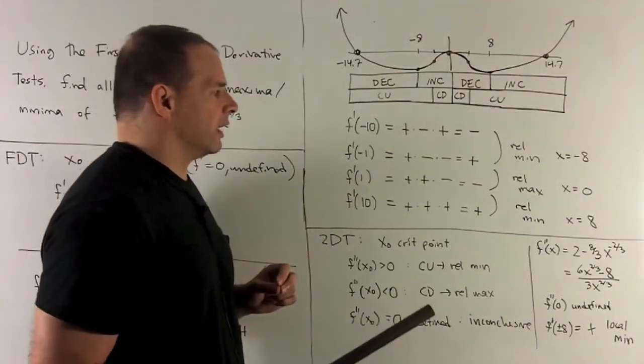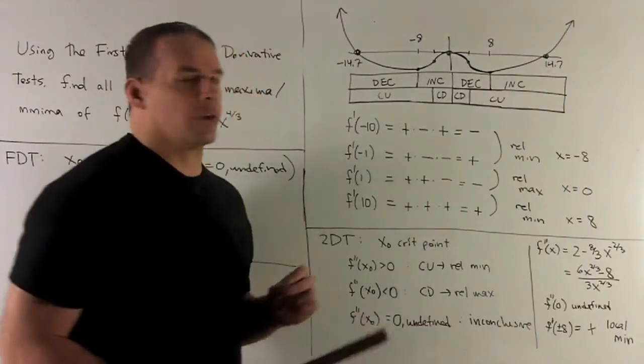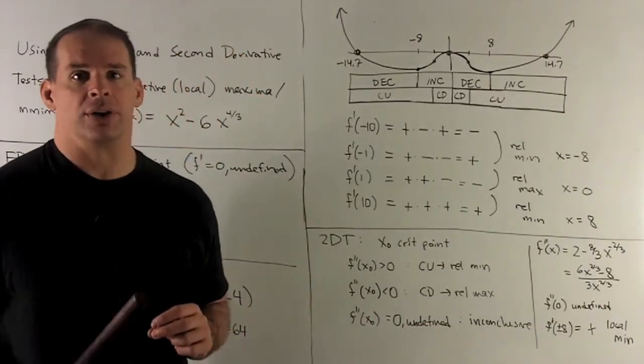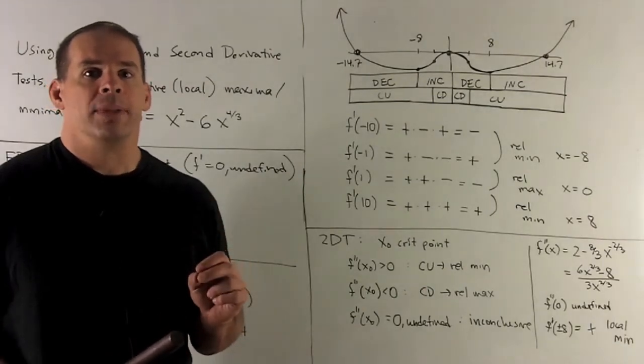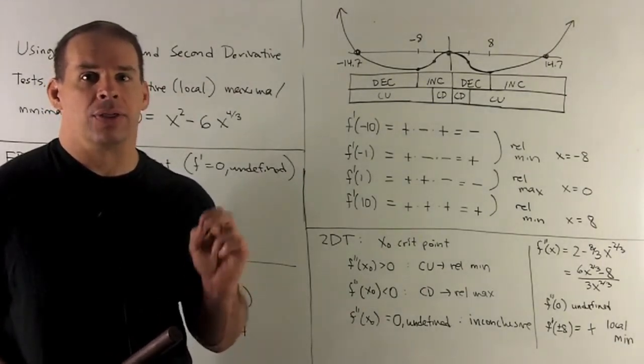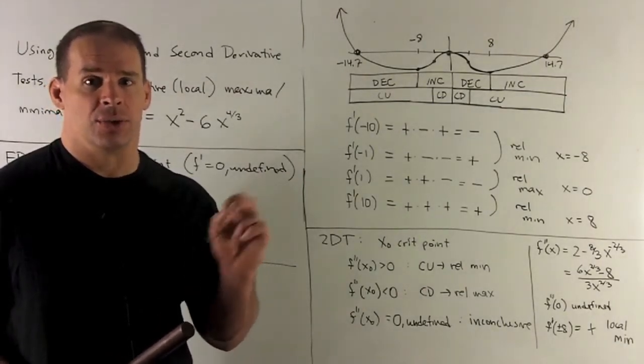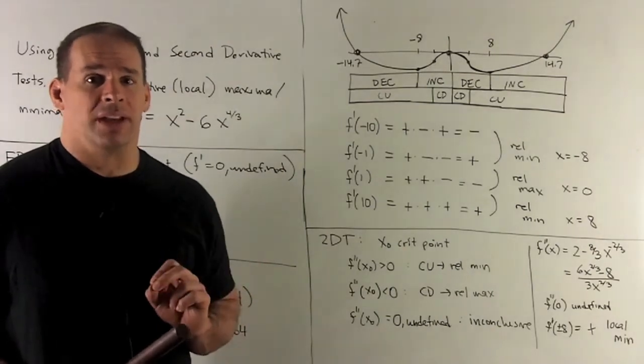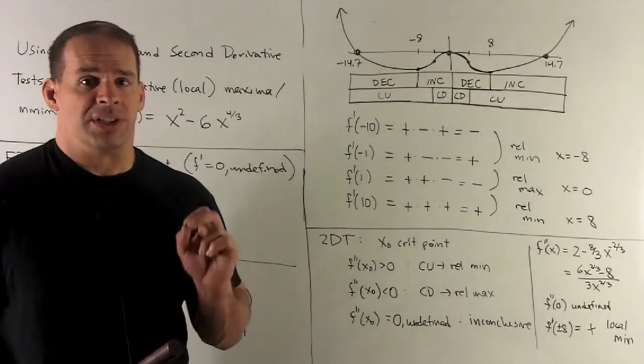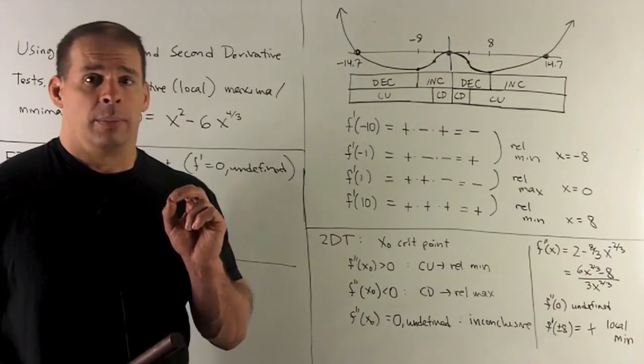Let's take a look. Take our second derivative. So what's that going to give us? We're going to get 2 minus 8 thirds x to the minus 2 thirds. But if I want to work with that, we're going to multiply top and bottom by 3 times x to the 2 thirds. That takes out the negative exponent.